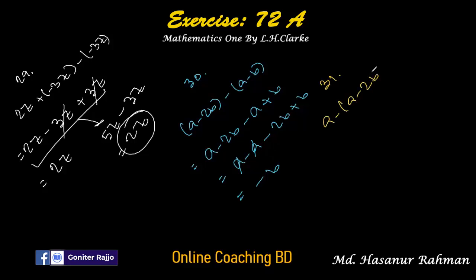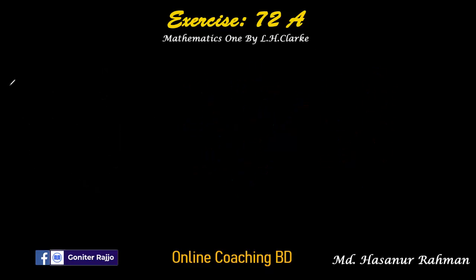Number thirty-one: a minus (a minus 2b). Expanding: a minus a minus into minus 2b is plus 2b. The a terms cancel, so the answer is 2b.